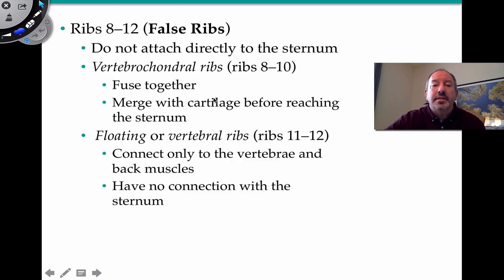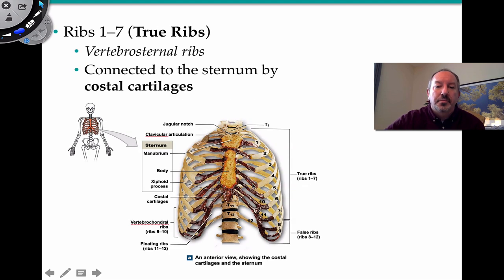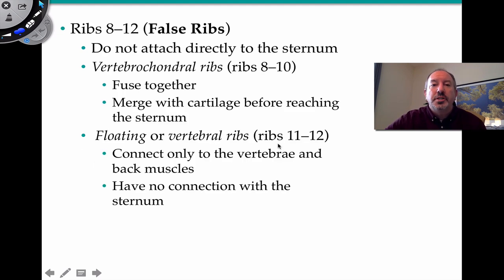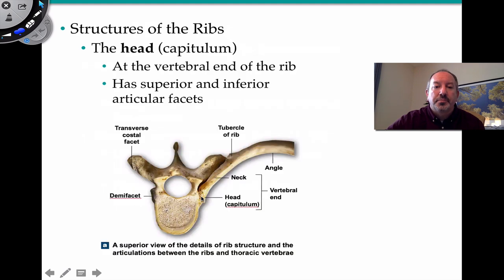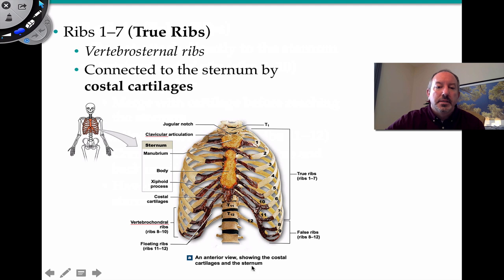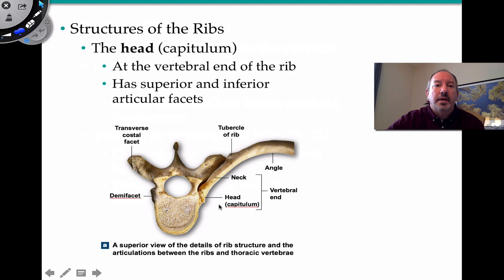False ribs, numbers 8 through 10, don't directly attach to the sternum — they fuse together and merge with cartilage before reaching it. Then there are two floating ribs, 11 and 12, which connect only to the vertebrae and some back muscles, with no connection whatsoever to the sternum.